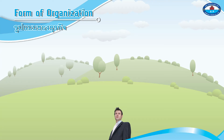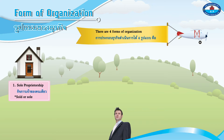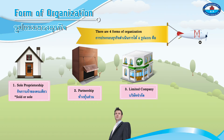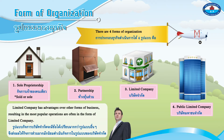There are four forms of organization: one, sole proprietorship; two, partnership; three, limited company; four, public limited company. The limited company has advantages over other forms of business, resulting in it being one of the most popular forms of operation.